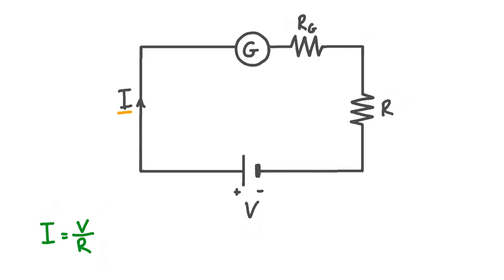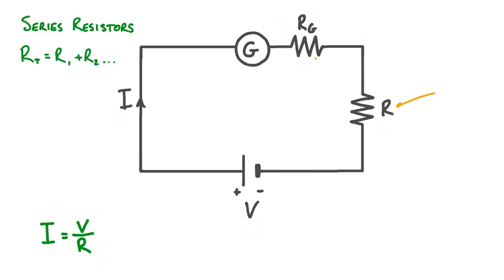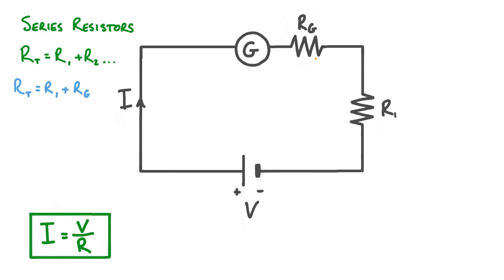We can make this explicit in our circuit diagram by drawing in an additional resistor with resistance Rg — the resistance of our galvanometer. This makes it clear there are now two resistors in our circuit. When resistors are connected in series, the total resistance Rt equals the sum of the individual resistances: R1 plus Rg. Applying Ohm's law to the whole circuit, the potential difference V hasn't changed, but the resistance is now R1 plus Rg. Since R1 plus Rg is bigger than just R1, we're dividing V by a bigger number, so the current I is smaller.